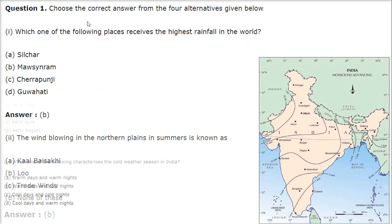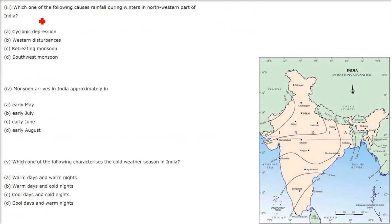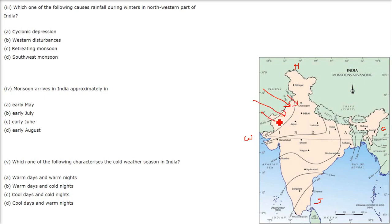Which one of the following causes rainfall during winters in the northern or northwestern part of India? So this is the north, the west, the east, and the south. We are talking about the rain in this region, and this is because of the western disturbances. So the answer will be B.